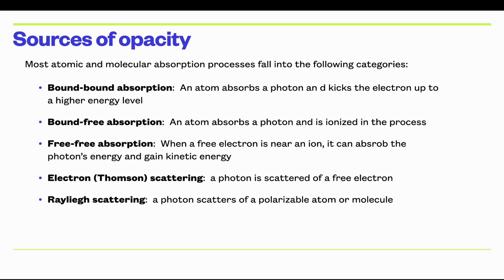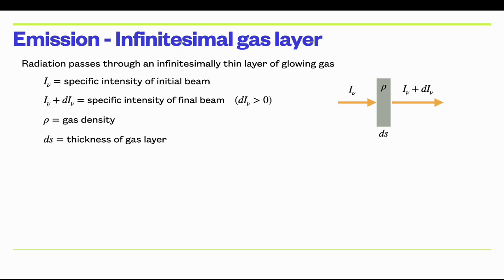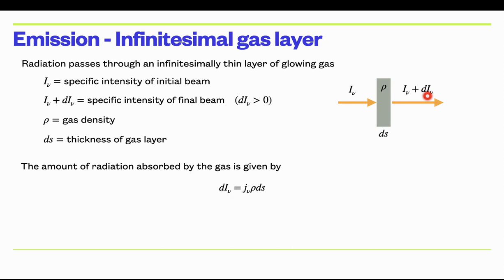Now let's look at emission processes. Same geometry as before, but now instead of the gas absorbing radiation, it's glowing and giving off radiation. So now dI_ν is a positive number — we're adding to the beam of light. The incremental change in specific intensity is given by J_ν ρ ds, where J_ν is the emission coefficient of the gas — it tells you how bright the gas is glowing per kilogram of material.